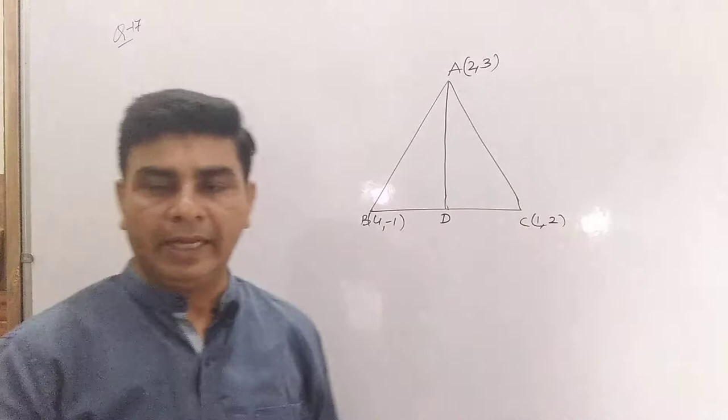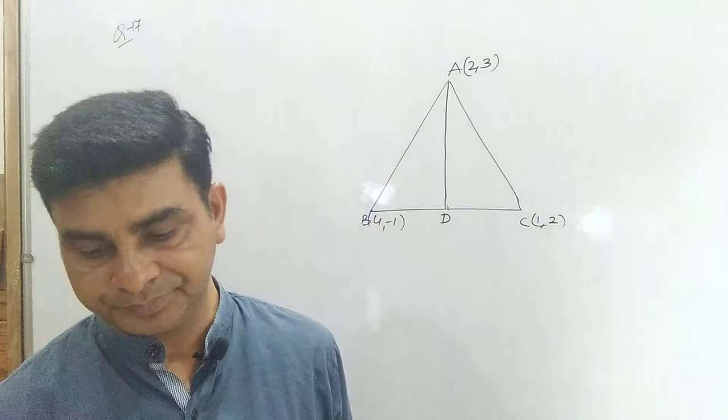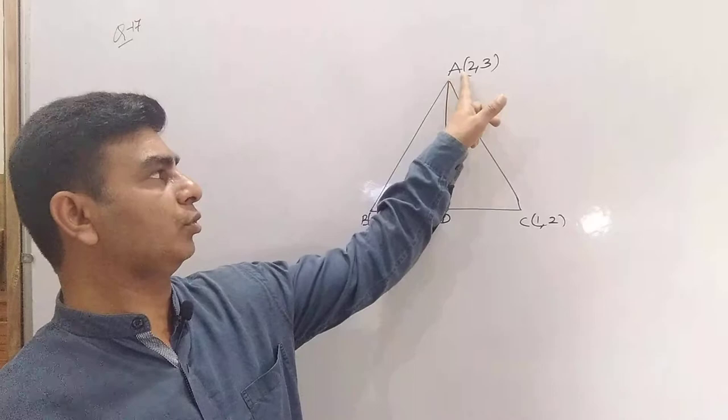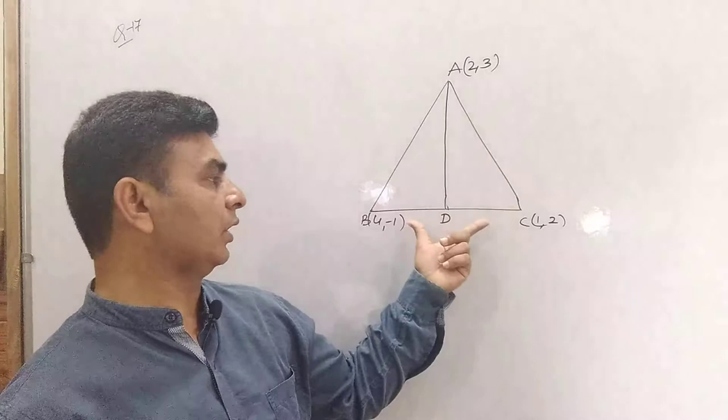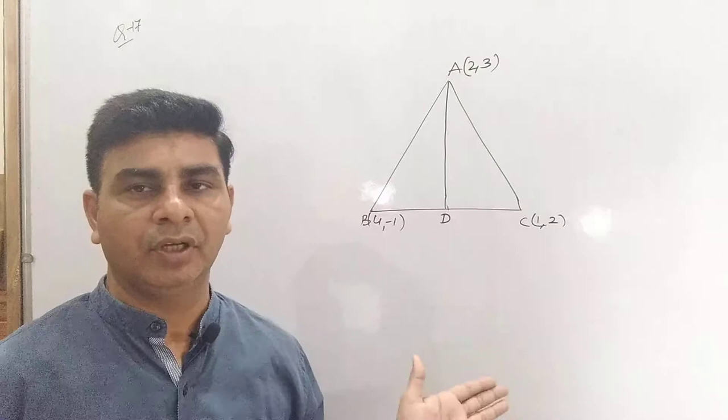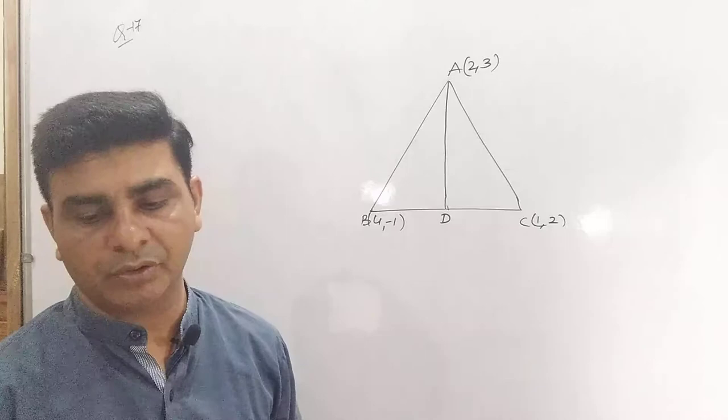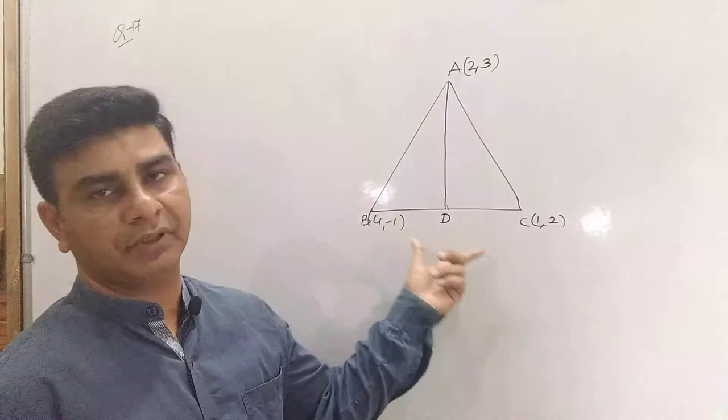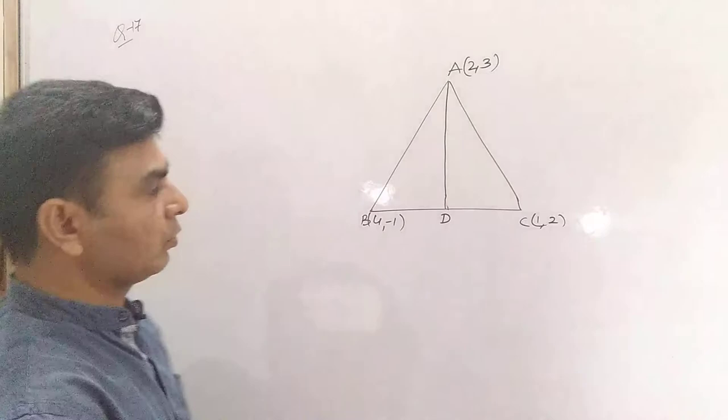We need to find the length of AD as well as the equation of the altitude. The altitude is the perpendicular distance from point A to line BC. To find the length, we use the formula: (ax₁ + by₁ + c) / √(a² + b²), which we also used in the previous question. So first we need to find the equation of line BC.